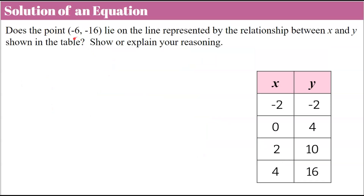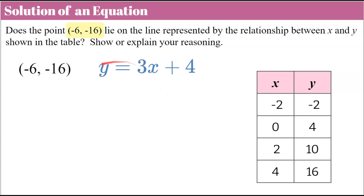Now we want to talk about solutions of an equation. We're asked: does the point (negative 6, negative 16) lie on the line represented by the relationship shown in the table? Every ordered pair in the table is a solution to this linear function — each point makes the equation true and lies on the line. To find out if this new point is on the line, we'll substitute its coordinates into the equation.